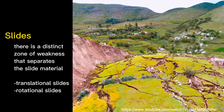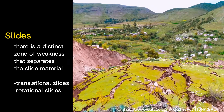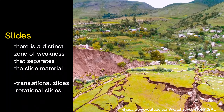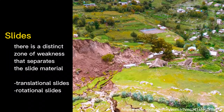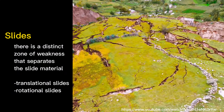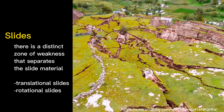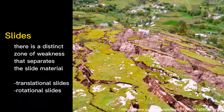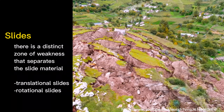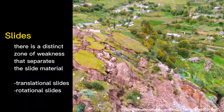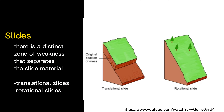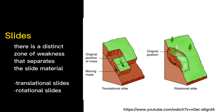Slides are where there is a distinct zone of weakness that separates the slide material from more stable underlying material. The two major types of slides are rotational slides and translational slides.